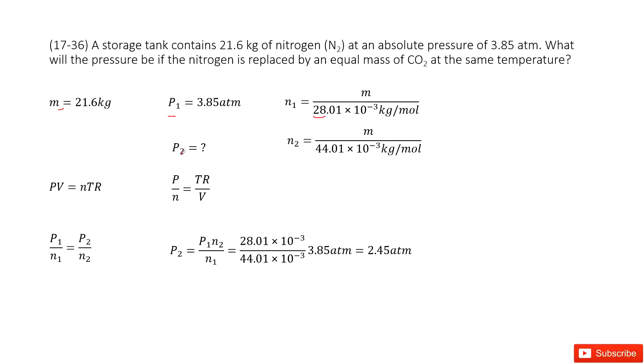So we need to find P2. And this time we know the mass is constant. So we can get the mole number N2 as the mass divided by carbon dioxide 44. Right?